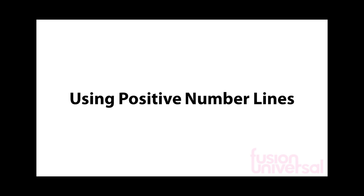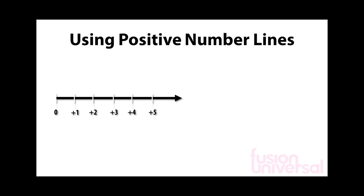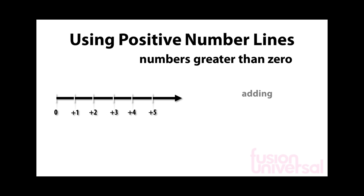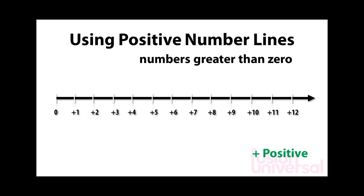We are going to have a look in this lesson at positive number lines, which are number lines for numbers greater than zero. We are going to look at how to use them when adding and subtracting numbers. We need to remember that all positive numbers have a plus sign in front of them, but in most cases we leave the plus sign out.